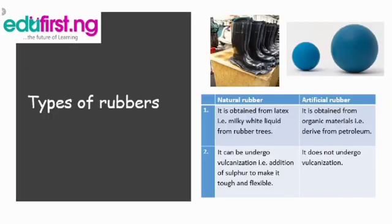There are two types of rubber: artificial rubber and natural rubber. Natural rubber is gotten from latex while artificial rubber is gotten from petroleum. Another difference is that natural rubber can undergo vulcanization. Vulcanization is the addition of sulfur to rubber in order to make it tough and flexible — that's where the word 'vulcanizer' comes from.